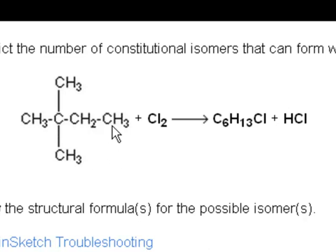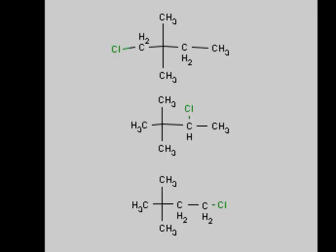So, one of these hydrogens on the CH3, one of these hydrogens on the CH2, and any one of these hydrogens on any one of these carbons will form three isomers. And here are the three isomers with the chlorines on them.